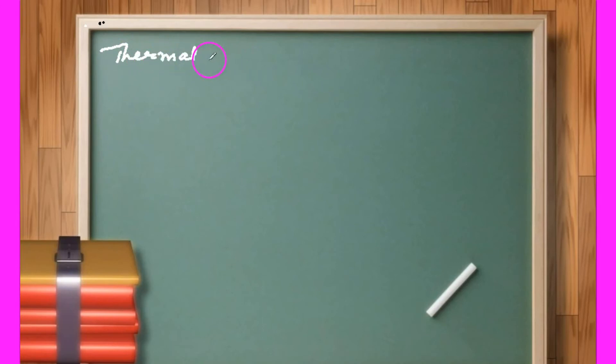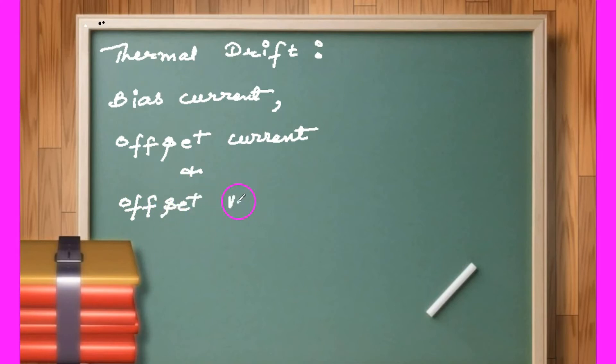Thermal Drift. It has been found that the bias current, offset current and offset voltage, they all are temperature dependent, that means these parameters, the value of these parameters changes with the temperature. That's called Thermal Drift.